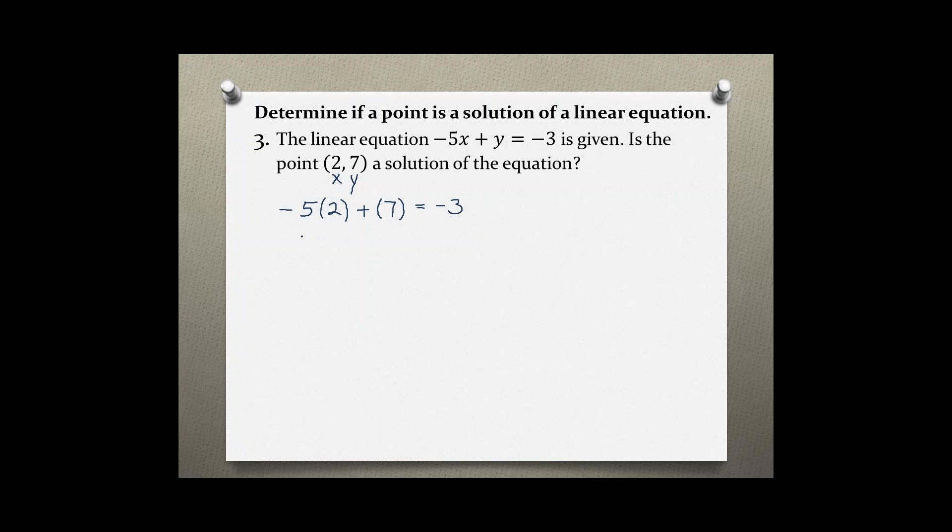-5 times 2 is -10, plus 7 equals -3. And -10 + 7 is -3, which equals -3.